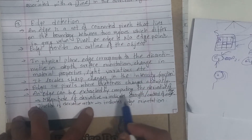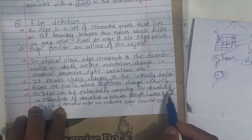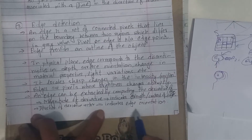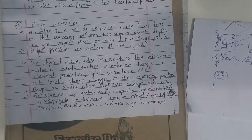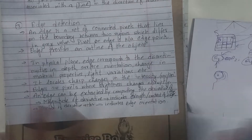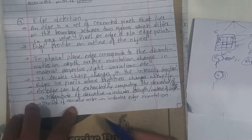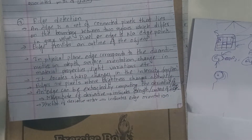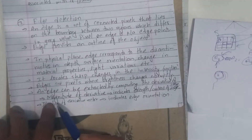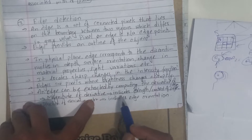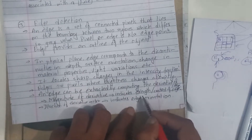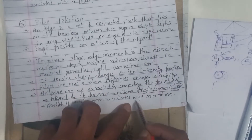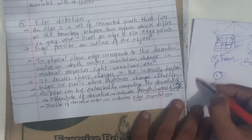An edge can be extracted by computing the derivative of the image. The magnitude of the derivative indicates the strength and contrast of the edge. The direction of the derivative vector indicates edge orientation.